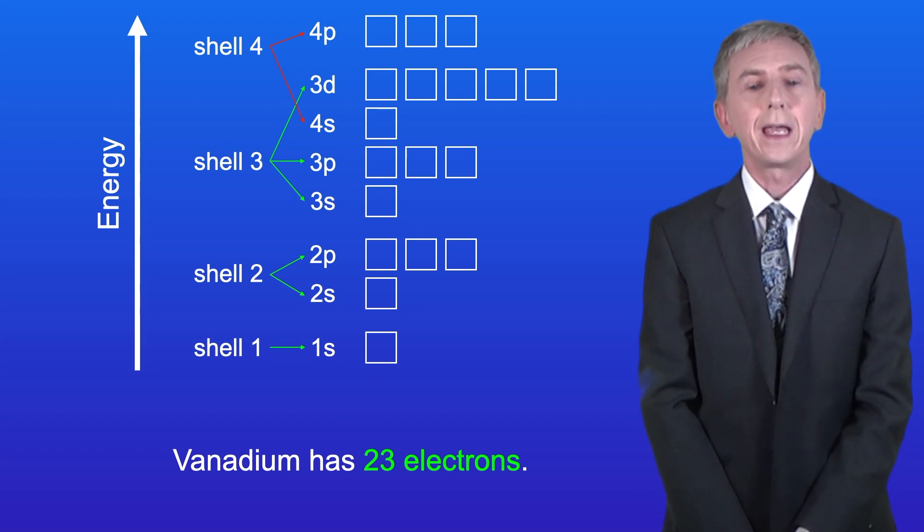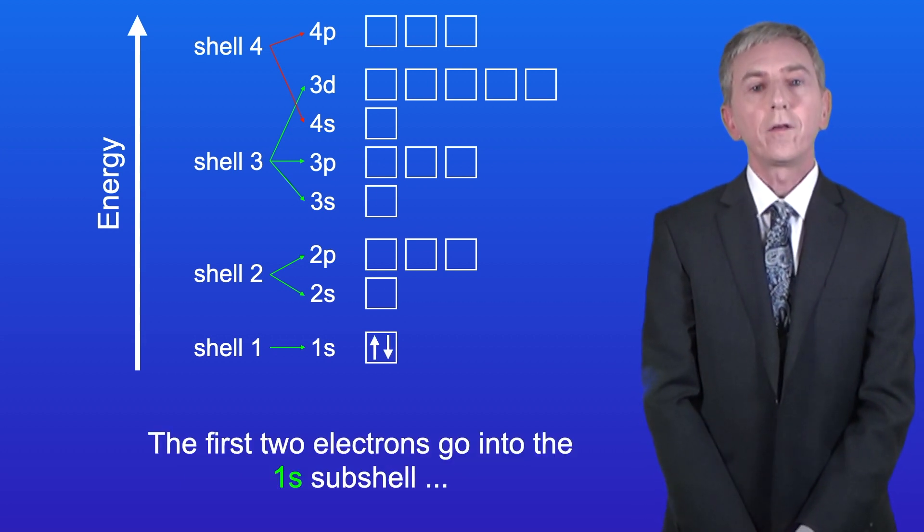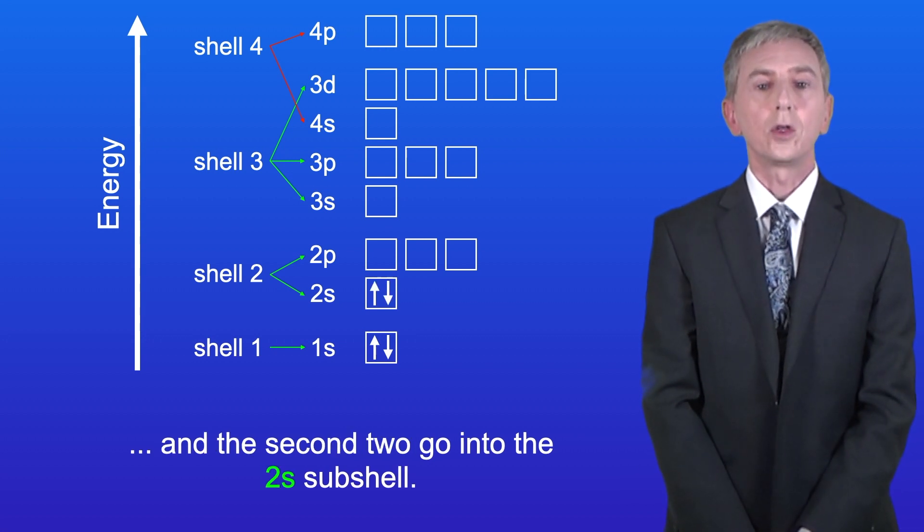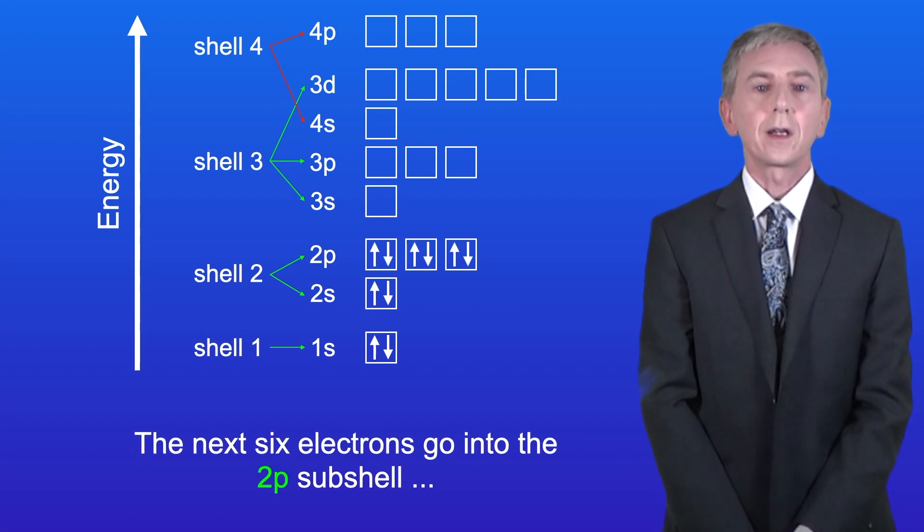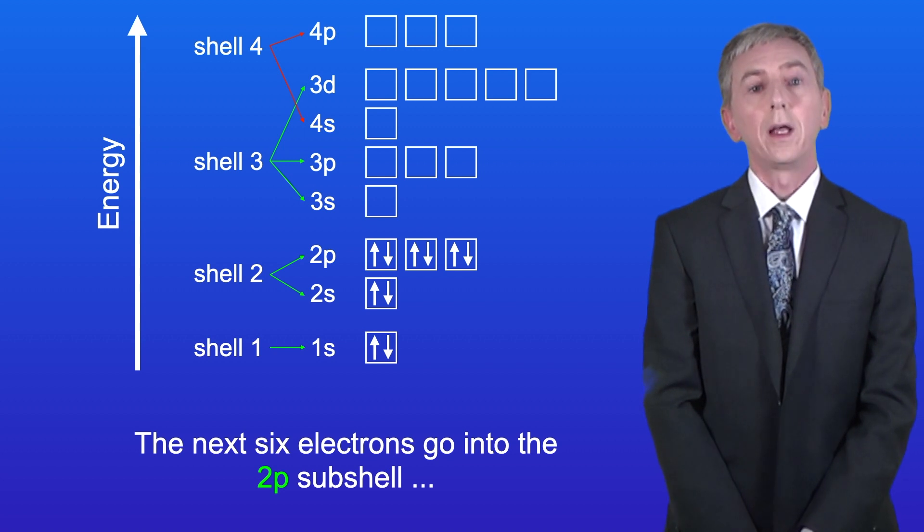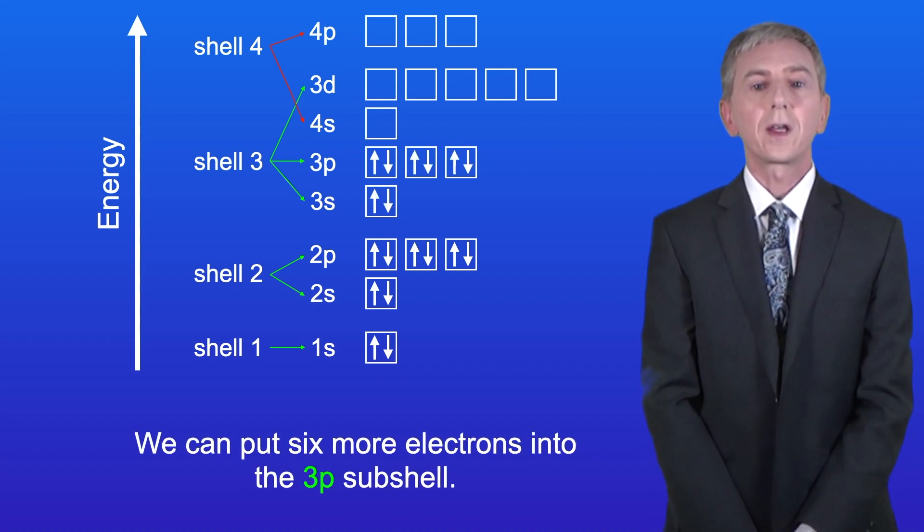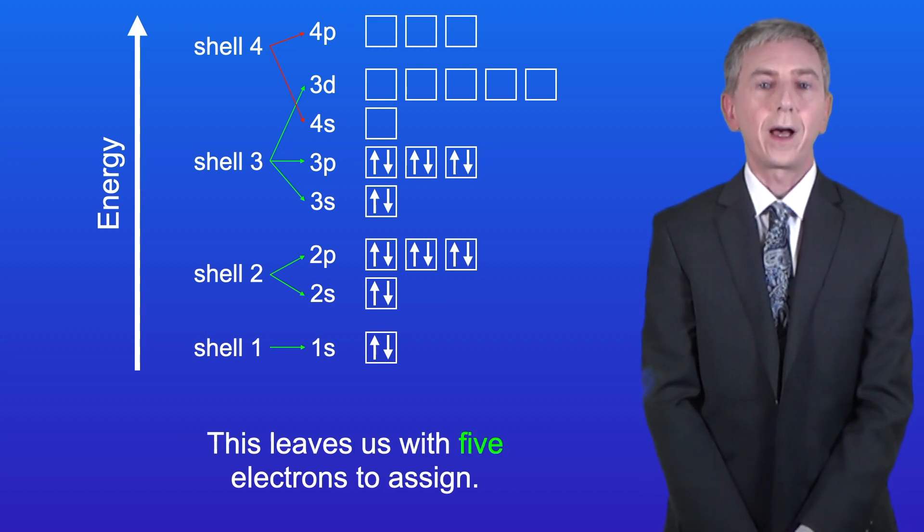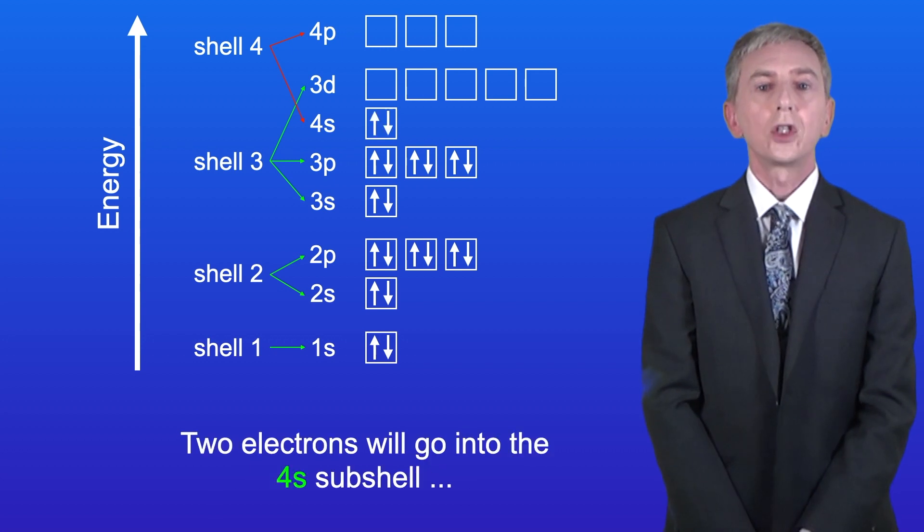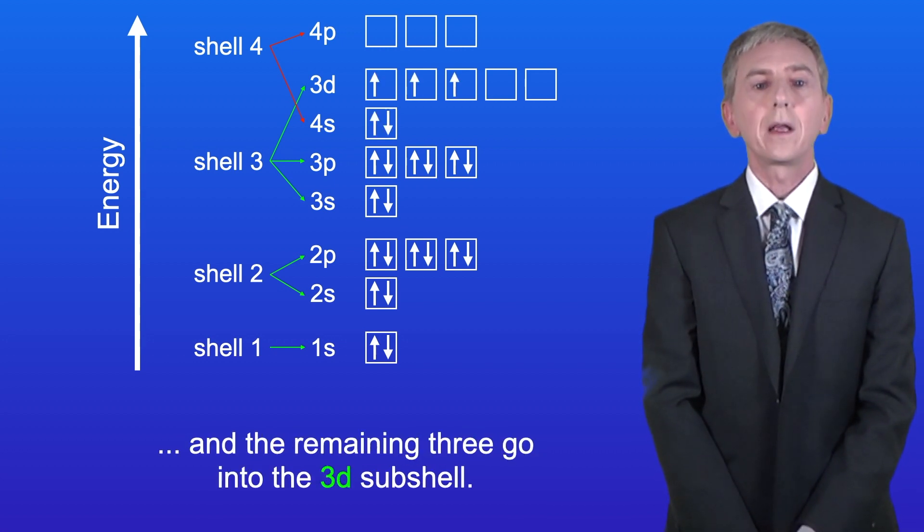As we said, vanadium has 23 electrons. The first two electrons go into the 1s-subshell, and the second two go into the 2s-subshell. The next six electrons go into the 2p-subshell, and the next two go into the 3s-subshell. We can now put six more electrons into the 3p-subshell. This leaves us with five electrons to assign. Two electrons will go into the 4s-subshell, and the remaining three go into the 3d-subshell.